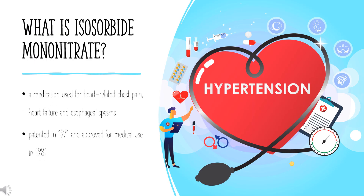Isosorbide mononitrate, sold under many brand names, is a medication used for heart-related chest pain, heart failure, and esophageal spasms. It can be used both to treat and to prevent heart-related chest pain; however, it is generally less preferred than beta blockers or calcium channel blockers. It was patented in 1971 and approved for medical use in 1981, and is available as a generic medication.